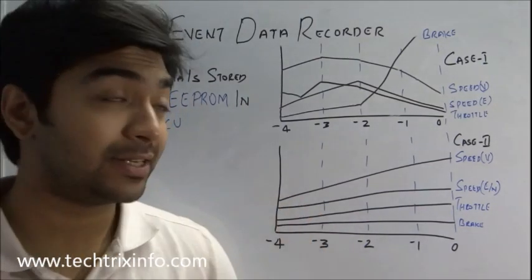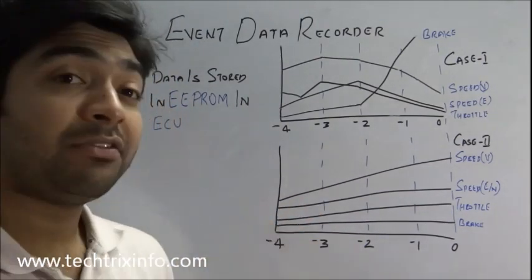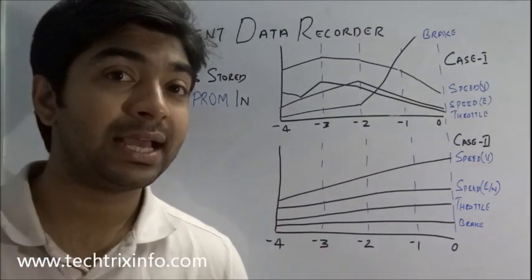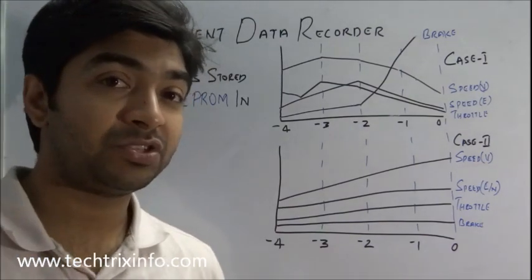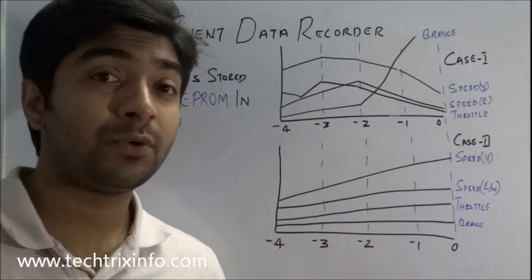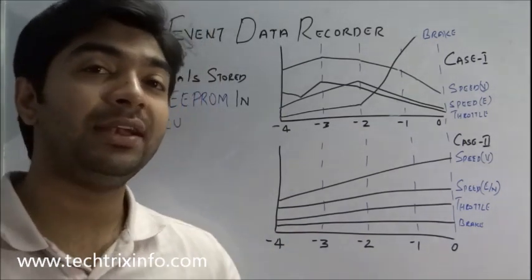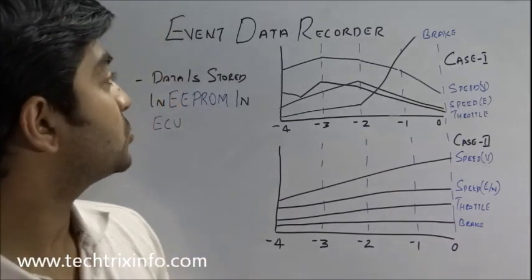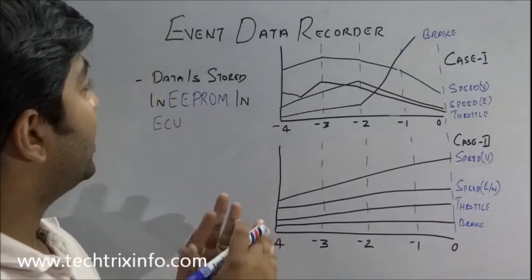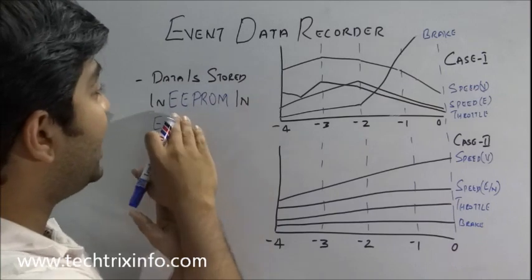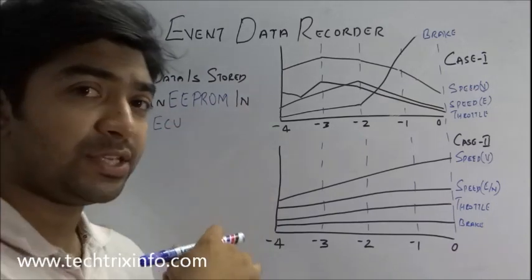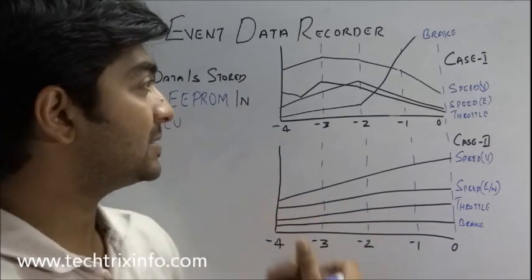And the car manufacturers also will get an edge to see that the accident was caused due to a technical failure which they need to fix for other vehicles so that those other vehicles in the field can be safe. The data is actually stored in an EEPROM in the ECU. So the ECU is actually getting these signals.